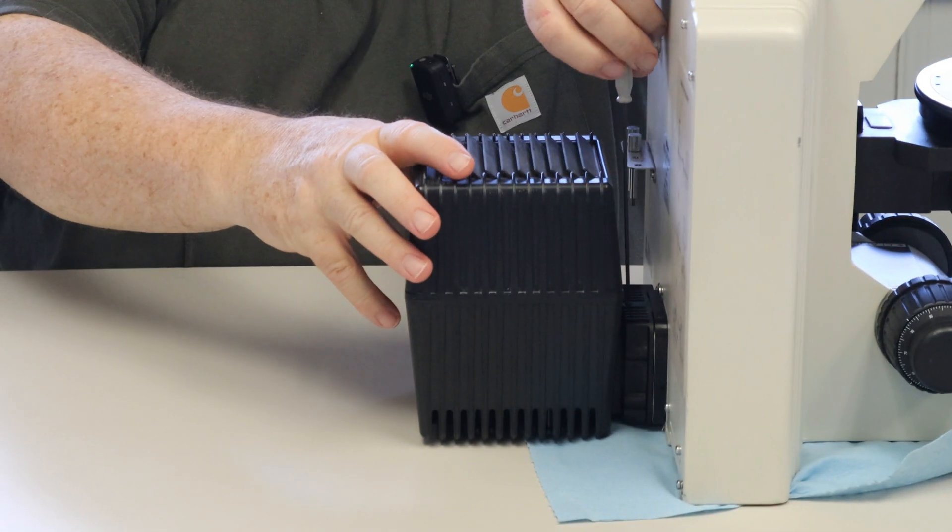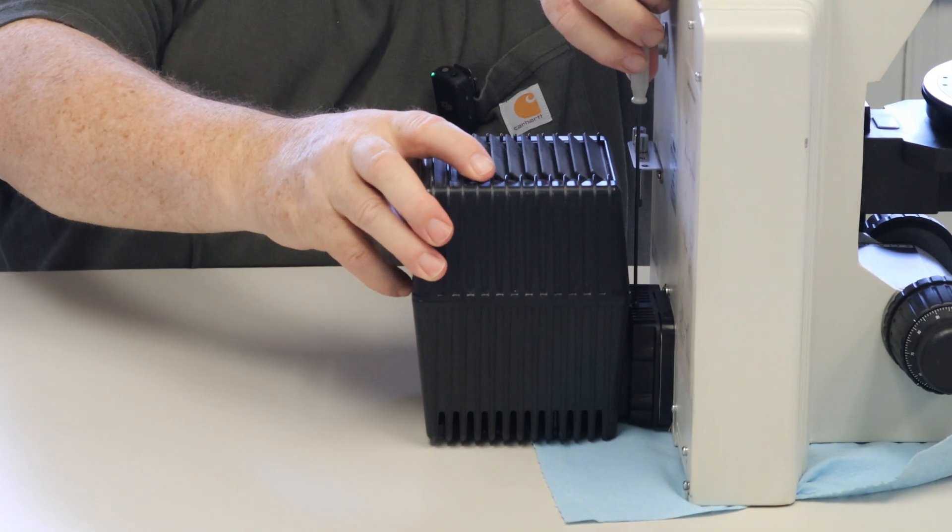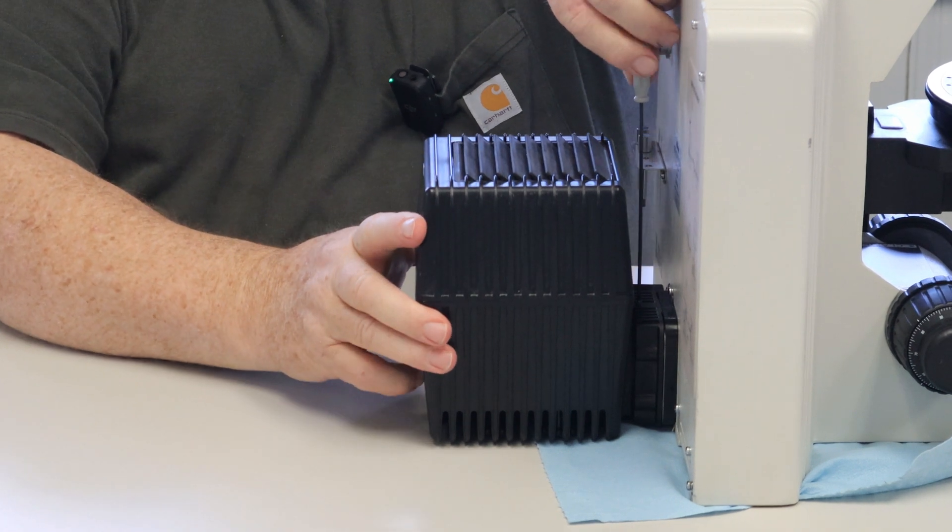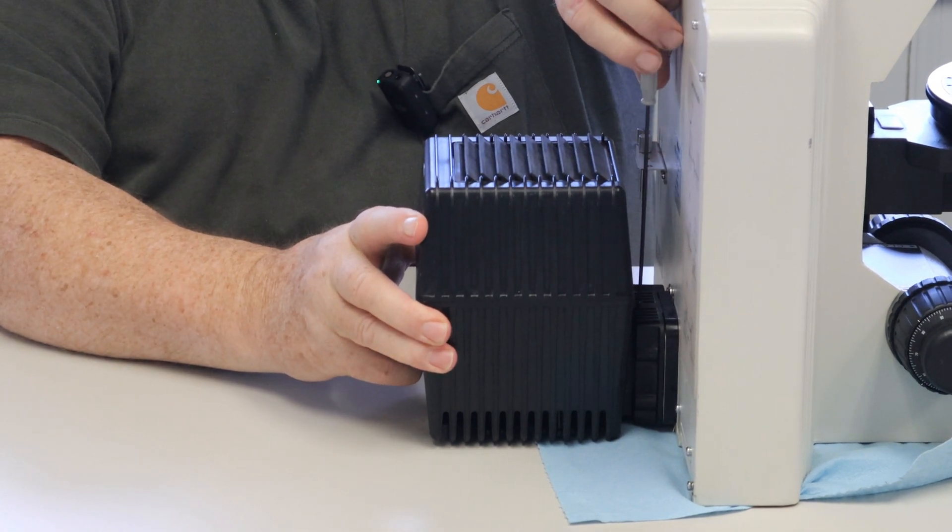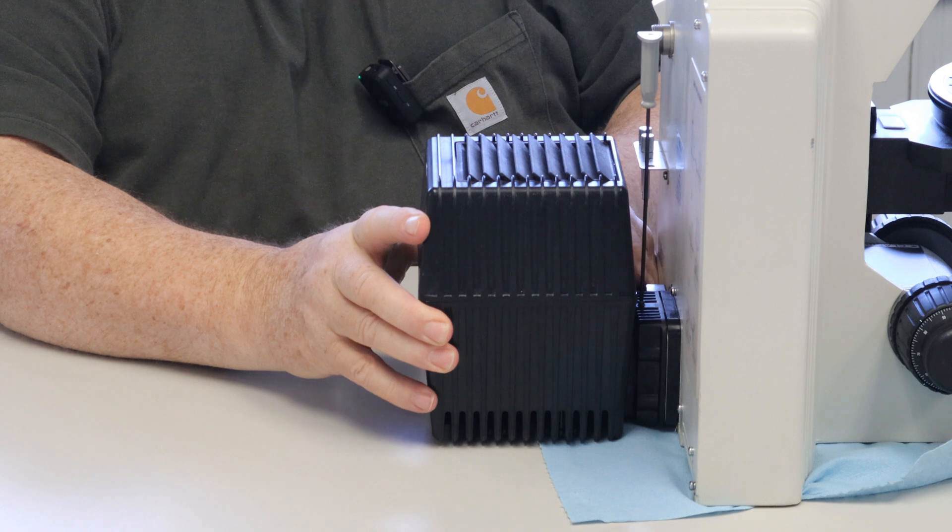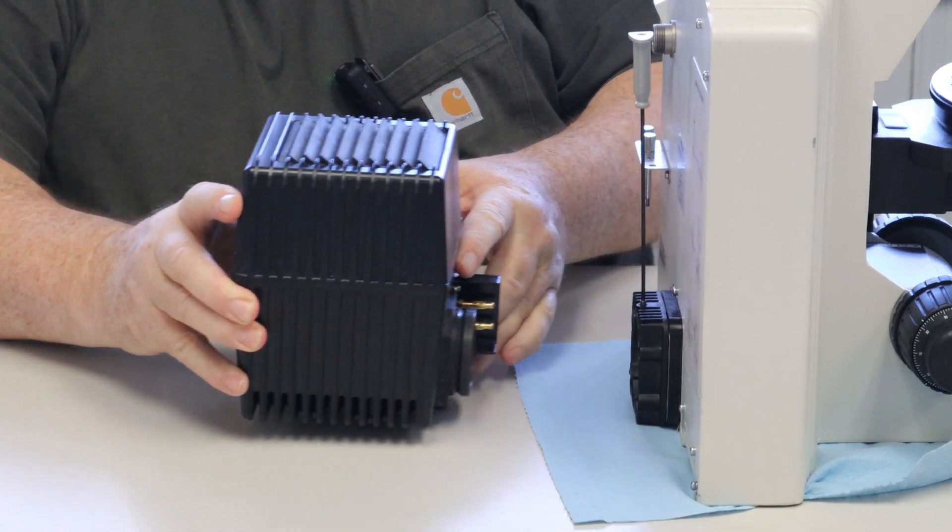Turn the wrench. You'll feel the lamp housing get loose. You don't have to take the screw all the way out. Then come down here and gently pull it back.